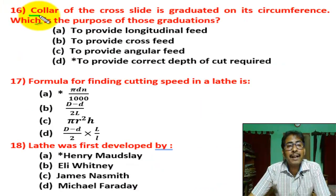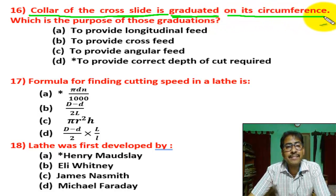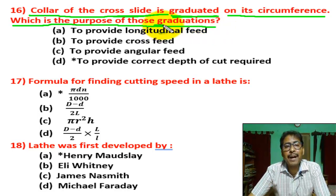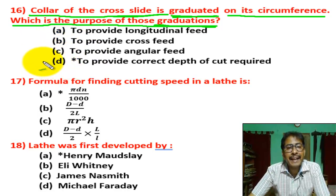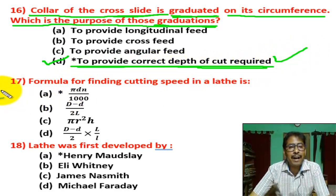Question number 16: the collar of the cross slide — the neck portion of the cross slide is graduated with a scale on its circumference. What is the purpose of those graduations? There are four options. Correct answer is D — to provide correct depth of cut.